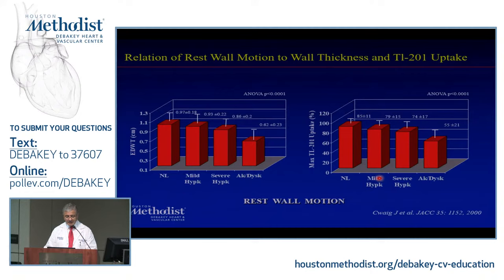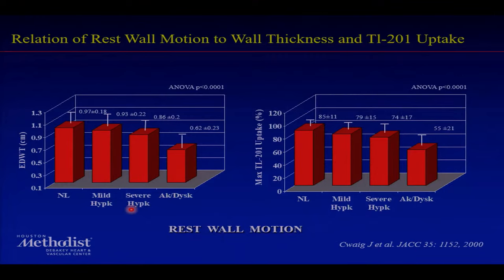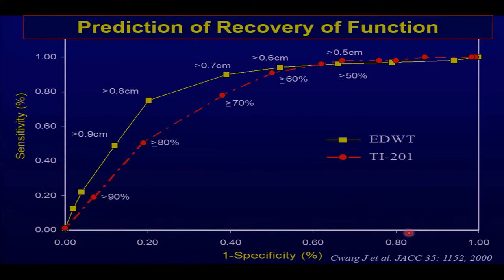This is from an early study by Dr. Schweig, now in Brazil. Comparison of wall thickness on the left side in the same patients with rest-redistribution thallium — you can see similar curves: if you have akinesis or severe hypokinesis, you have less and less uptake with nuclear. With rest-redistribution nuclear, if you have greater than 60% uptake, that may tell you about viability, corresponding to about five to six millimeters of thickness in those patients.